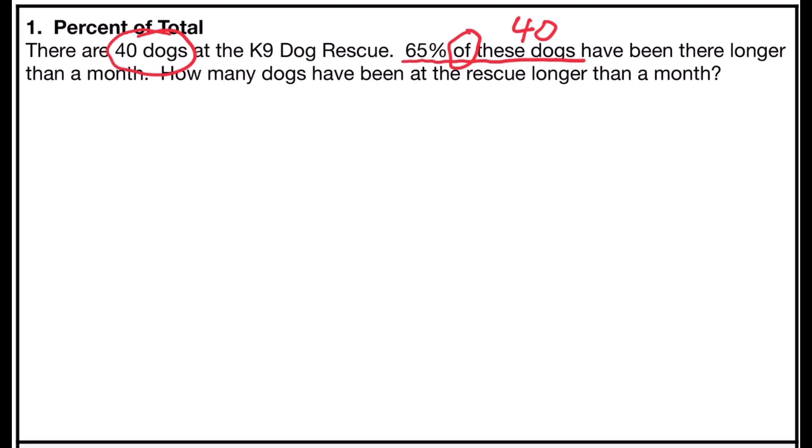So I'm going to multiply 65% in decimal form, which is .65, times the 40 dogs total that are at the kennel. If I multiply .65 times 40 and punch that into a calculator, I get the answer 26. So that means 26 dogs have been at the canine dog rescue longer than a month.